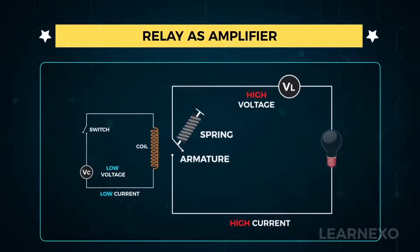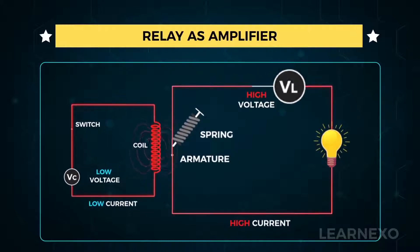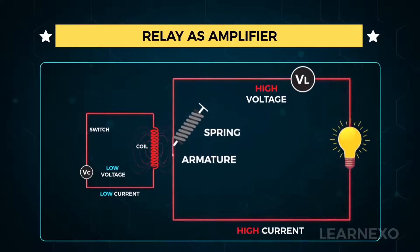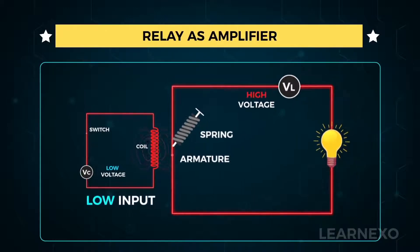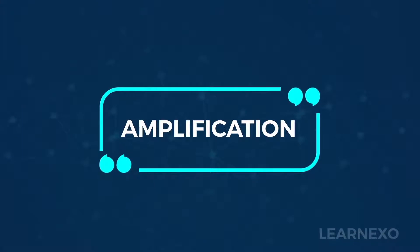Let's see a relay working as an amplifier. Even if we give a low voltage to the control circuit and a high voltage to the load circuit, the low current in the control circuit is able to control the high current in the load circuit. The input of the relay is low and the output is high, which is nothing but amplification. And it's just that simple.